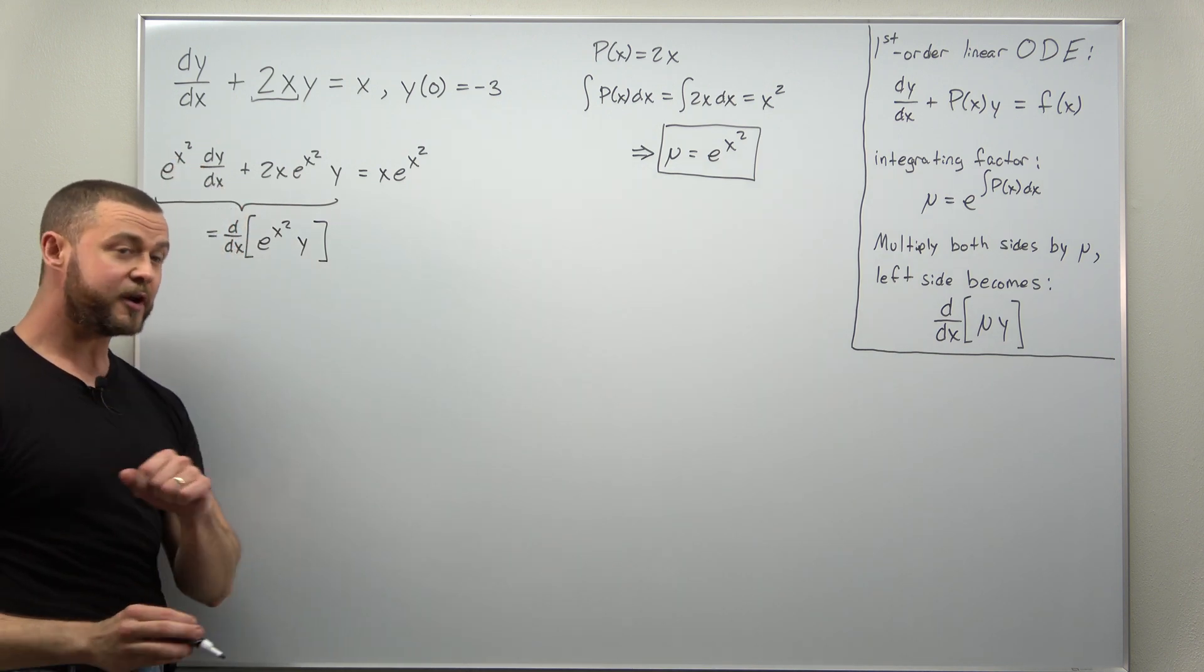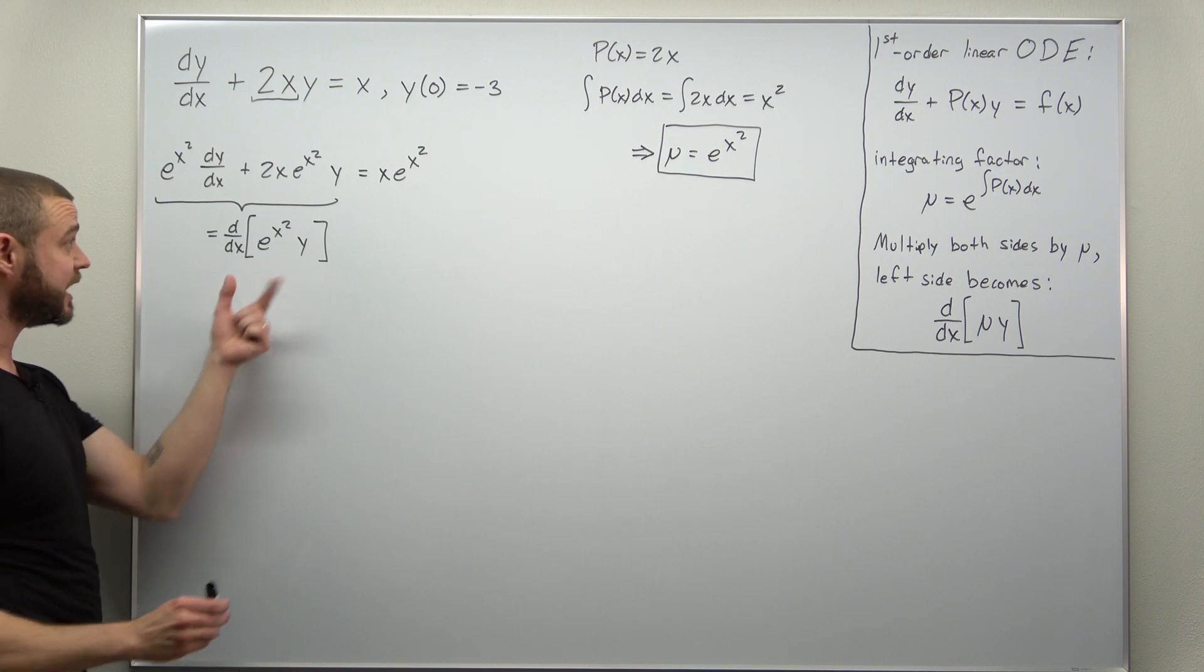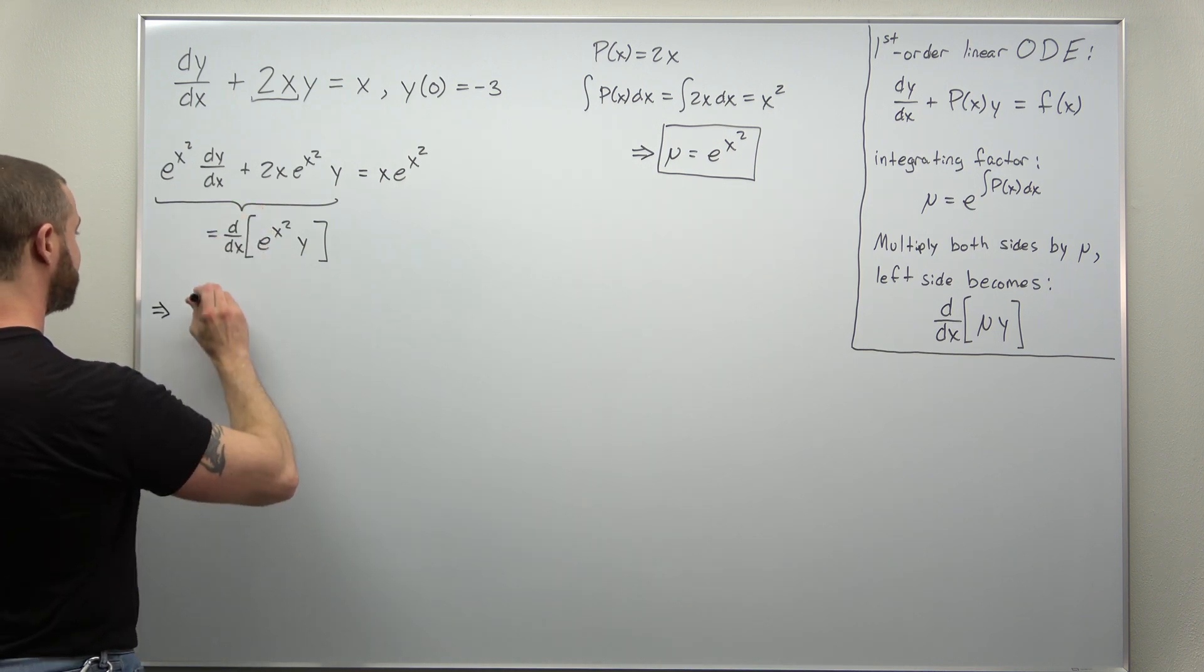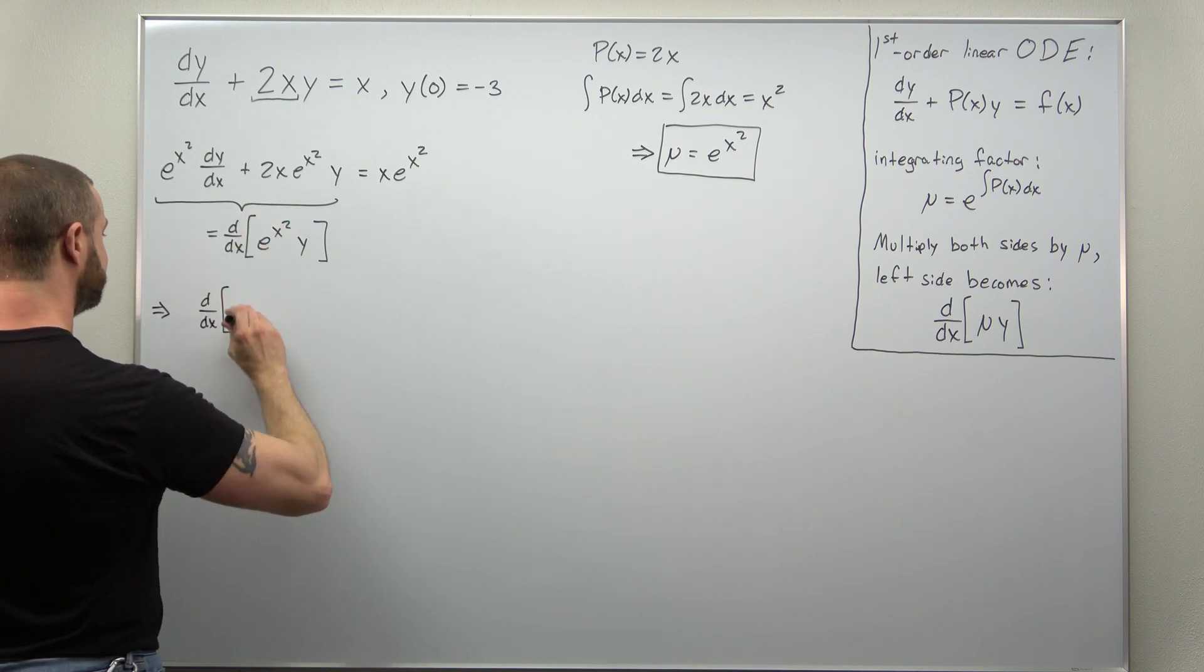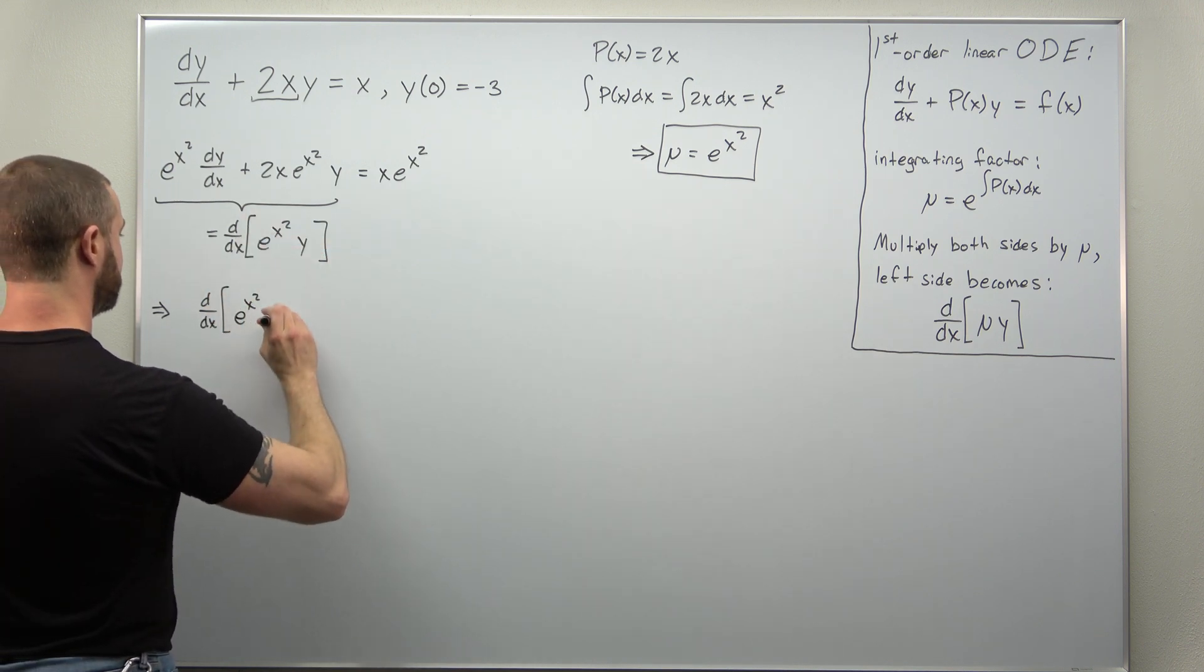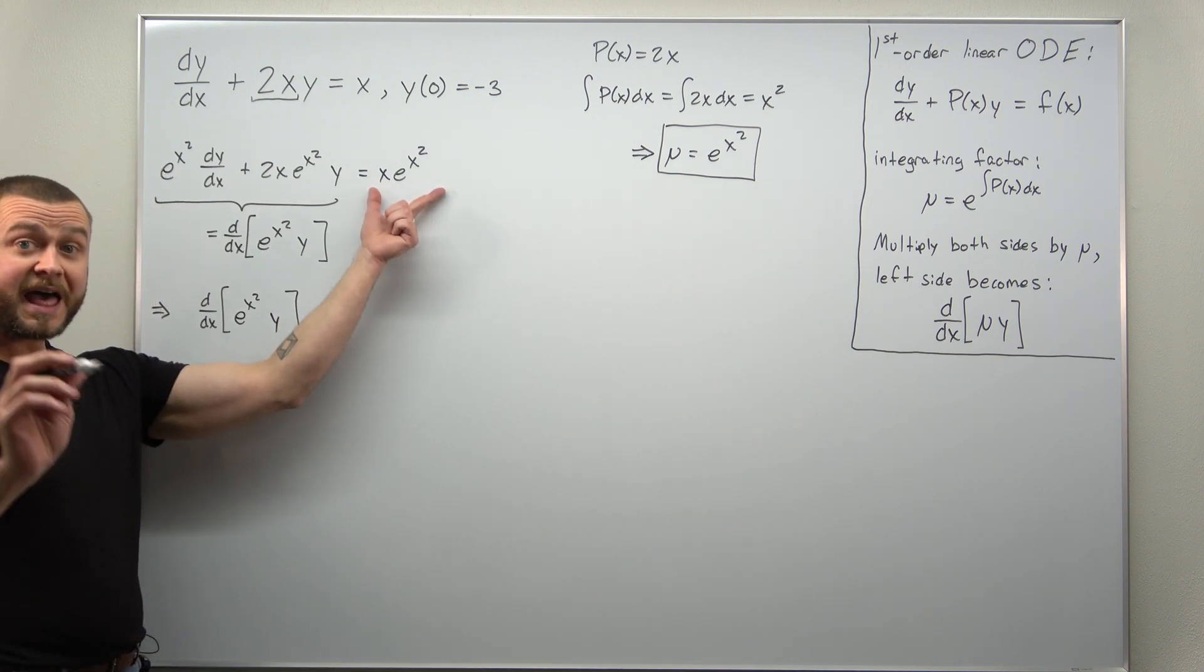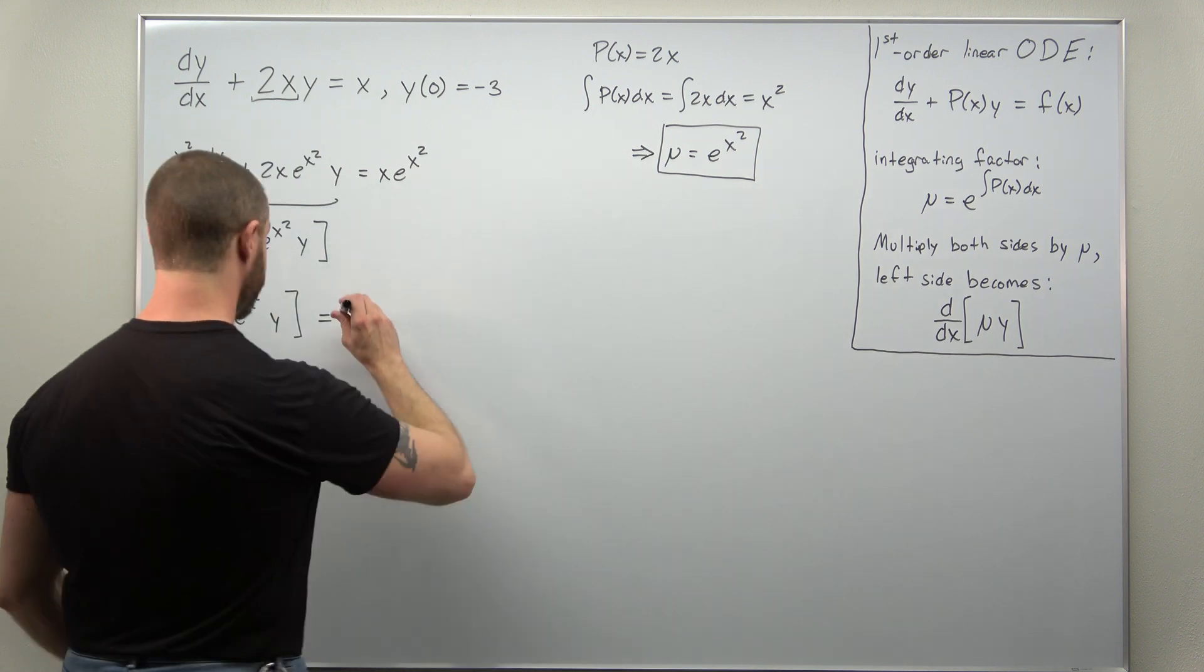Let's go ahead and write down the differential equation, that's just the left side. So we have the left side as the derivative with respect to x of e to the x squared times y, and that equals x times e to the x squared.